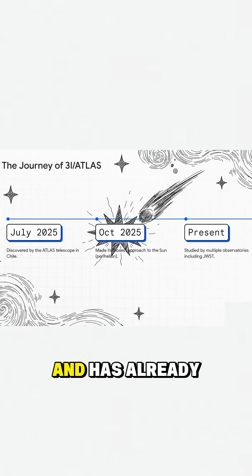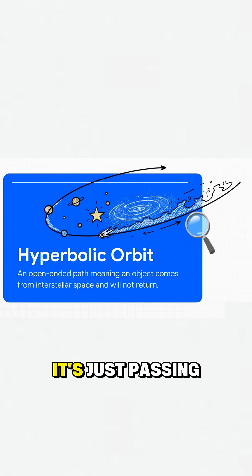It was spotted just last year and has already zipped right past the sun. Its path proves it's just passing through. It's on a one-way trip, and it's not coming back.